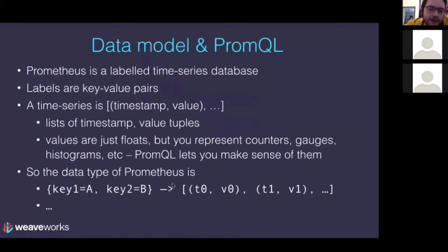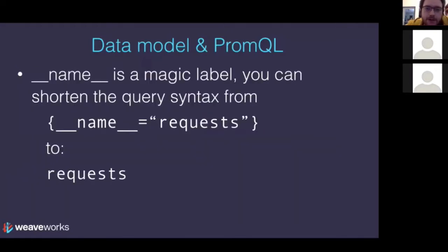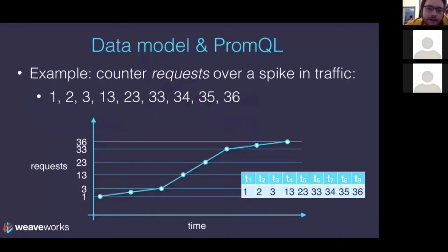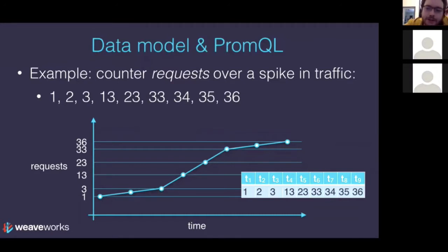The important fact about Prometheus is that the things that index the time series are sets of key-value pairs — for example, key1 maps to A and key2 maps to B. There's a special piece of magic in PromQL (the Prometheus query language): a word like `requests` expands internally to a magic label `__name__ = requests`. For a concrete example: a web server counting requests might go 1, 2, 3, 13, 23, 33 etc. — for the first three seconds you get one request per second, the next three seconds you get 10 requests per second, then back to one. Just looking at this counter graph isn't very useful, so what you need to do from a mathematical perspective is differentiate this graph.